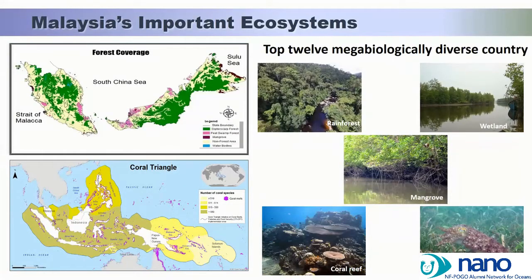Malaysia is one of the top 12 mega biologically diverse countries. We have large coverage of rainforest, wetland, mangrove, seagrass, and coral reef. As you might know, we are part of the Coral Triangle — a very important and amazing place for coral reef systems.